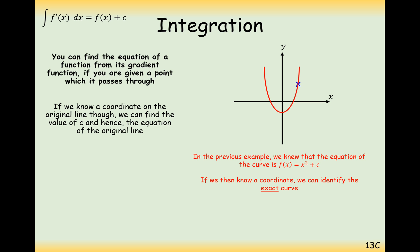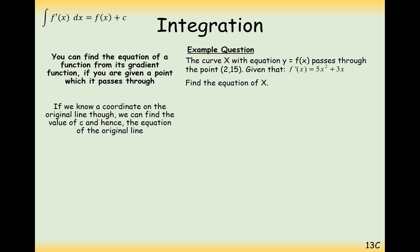Let's go through a question. The curve x with the equation y equals f(x) passes through the point (2, 15) and it has a gradient function here of 5x squared plus 3x. We want to find the equation of x. So the first thing we'll need to do here is integrate our gradient function. This is going to be increase the power by 1 divided by the new power plus the c in both cases here.